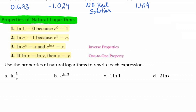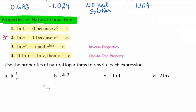The first problem is the natural log of 1 over e, which seems challenging. We look at property 2, which tells us ln(e) = 1 because e to the 1 is e. However, e to the negative 1 is 1 over e, so the natural log of 1 over e gives us an answer of negative 1.